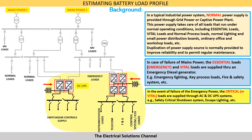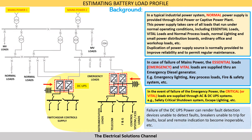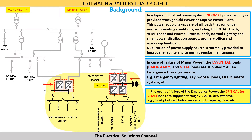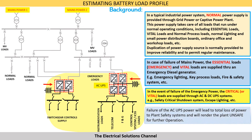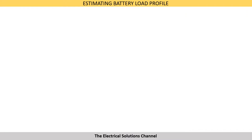Failure of DC UPS power can result in fault detection devices being unable to detect faults, breakers unable to trip on faults, and local and remote indication becoming inoperable. Failure of AC UPS power will lead to total loss of power to the plant safety systems and will render the plant unsafe for further operation.